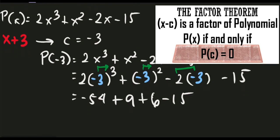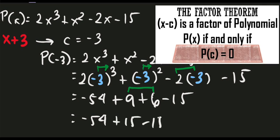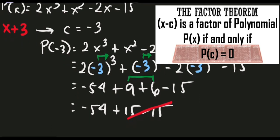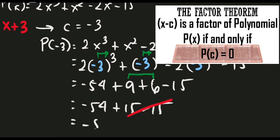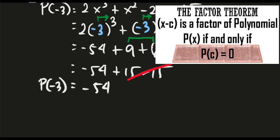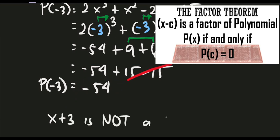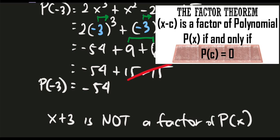Simplifying: negative 54 plus 9 plus 6 minus 15. We have 9 plus 6 equals 15, so plus 15 minus 15 is 0. But the total is negative 54 plus 0, giving negative 54. So P sub negative 3 is equal to negative 54. Since this value is not equal to 0, x plus 3 is not a factor of the given polynomial p of x. That is our final answer.